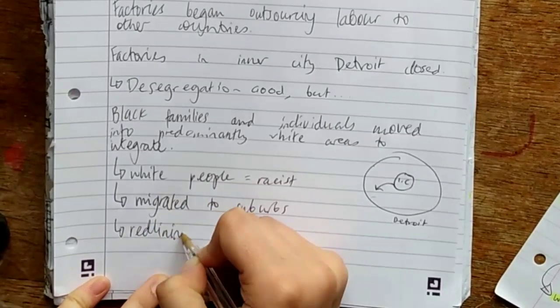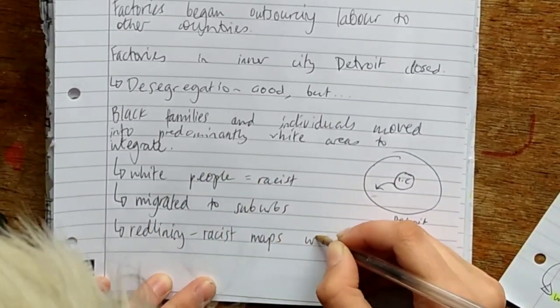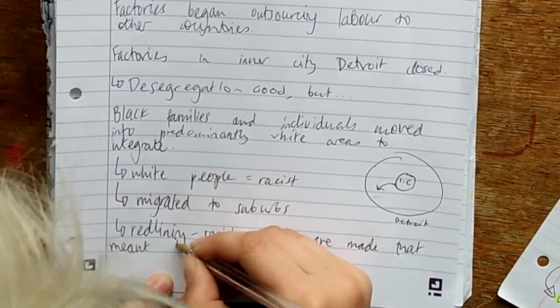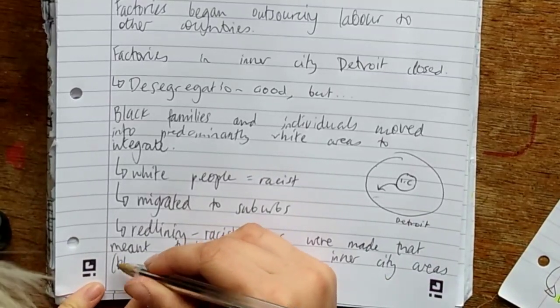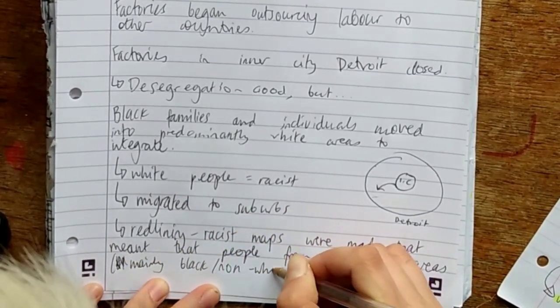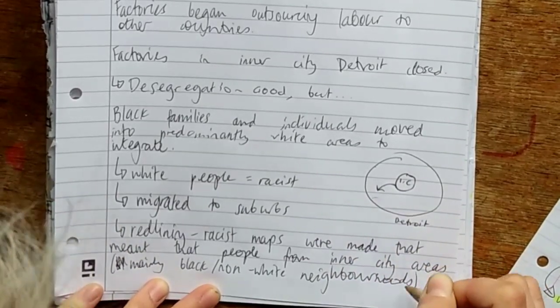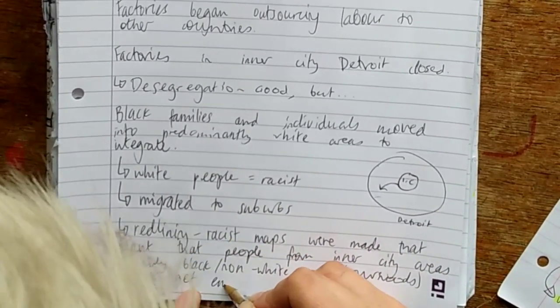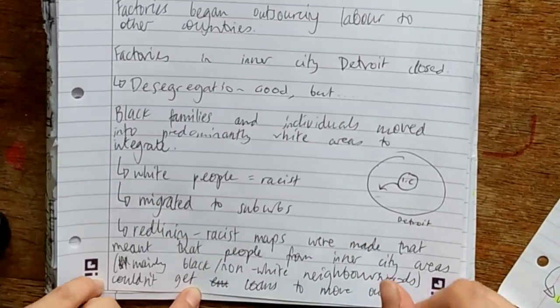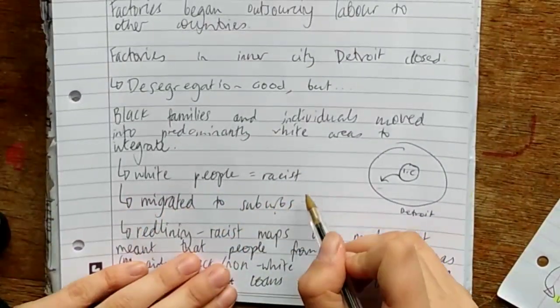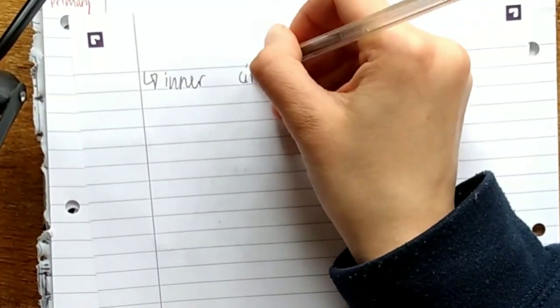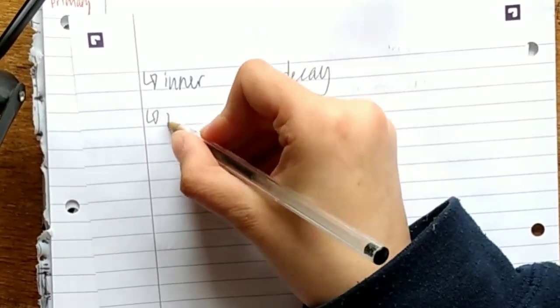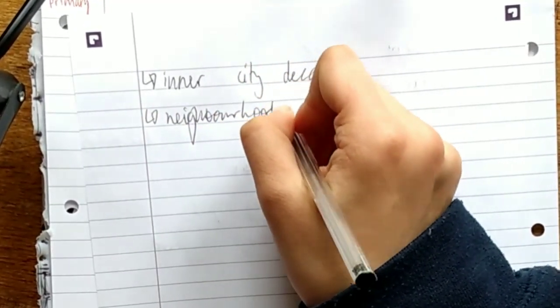Redlining made the situation even worse. Maps were made of areas based on demographics, which meant that people from inner city areas, which were majority black people or non-white people, were denied services such as taking out loans to get houses and starting up businesses and even things like supermarkets. A really useful piece of vocab here is white flight. Just remember that.